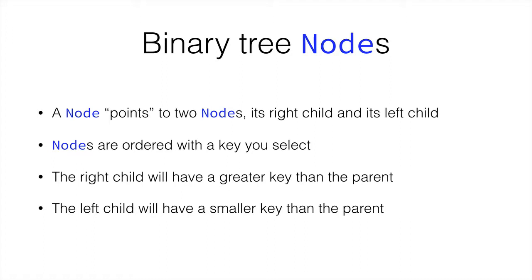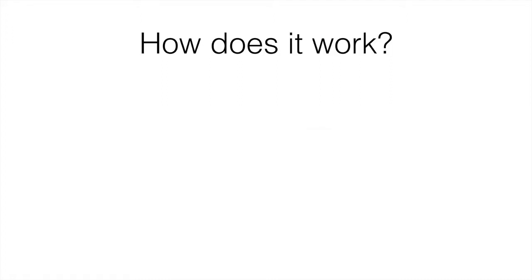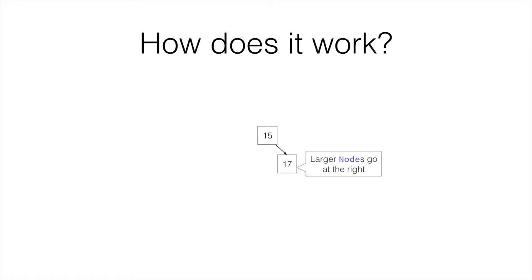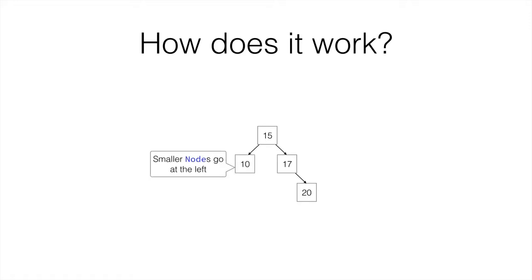Let's see this graphically. Let's say we have 15, which is our root node, or our head. And then we have 17, which is larger, so it goes to the right — 17 is 15's right child. This 17 can have another child that also goes to the right and is also bigger than 17. 15 then has a smaller child that goes to the left, and this is 10.